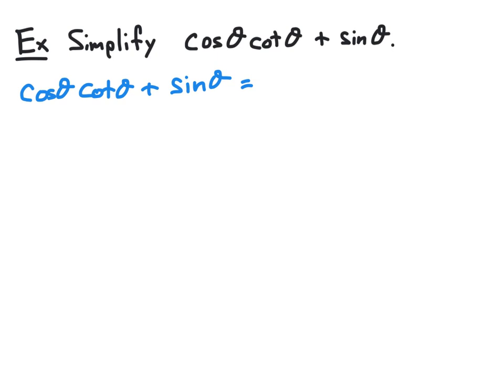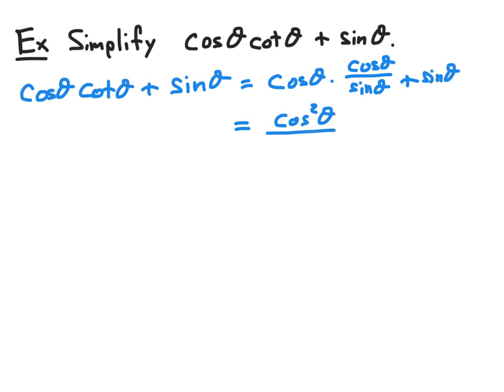We really don't have any identities that deal with just sine theta or cosine theta. The Pythagorean identity deals with sine squared or cosine squared, which we don't have here. So the only thing that jumps out at us is the cotangent function in the first term. We know that cotangent can be written as cosine divided by sine — this is one of the reciprocal identities. So we'll replace cotangent theta with cosine theta over sine theta. Now we do some algebra: in that first term, cosine times cosine over sine gives us cosine squared theta over sine theta.